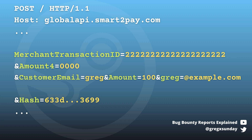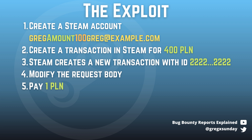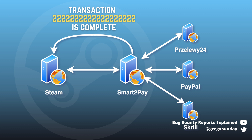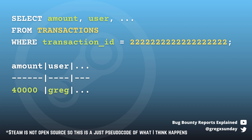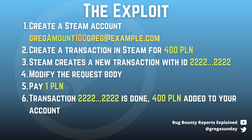So you proceed to pay one PLN. After the transaction is complete, Smart2Pay sends a webhook to Steam that the transaction with the ID from step 3 is complete. Then Steam takes a look into the database, finds a transaction with this ID, and sees that it has an amount of 400 PLN — so it adds 400 PLN to your account when you only paid one PLN. The vulnerability was classified as critical and the hunter was awarded $7,500.